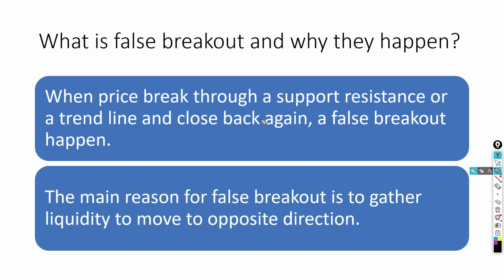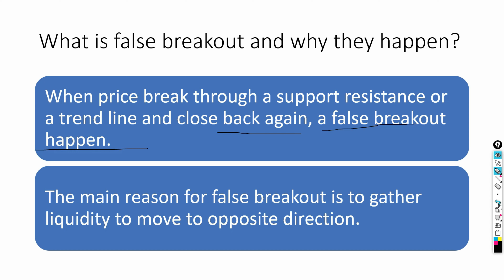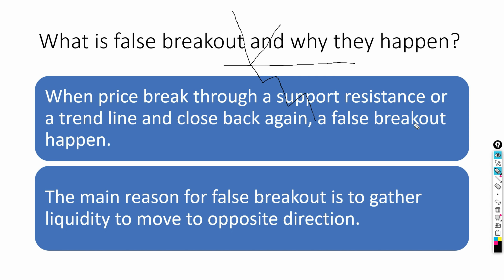So what is a false breakout and why do they happen? A false breakout occurs when price breaks through a support, resistance, or trend line and then closes back again on the other side. For example, say this is a support and price comes down and touches it. Normally it should either bounce back or break through and move down. But a false breakout is when price breaks below the support, then closes back above it and starts moving in the other direction.